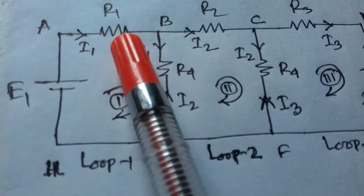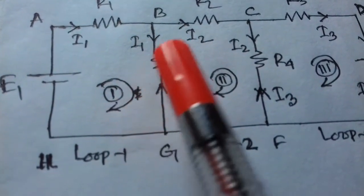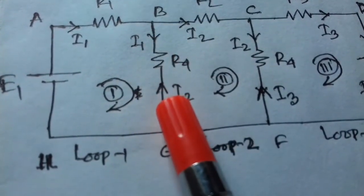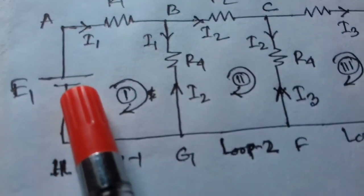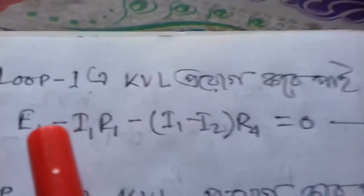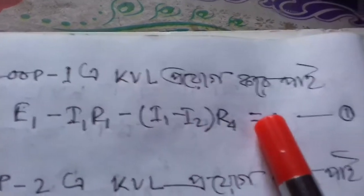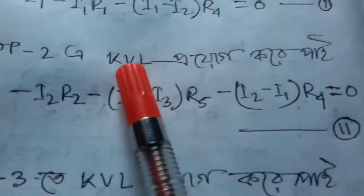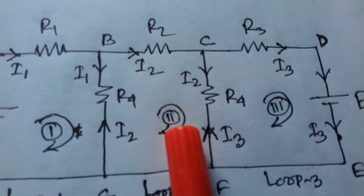So we write: minus I1 R1, minus I1 minus I2 into R4, plus E1 equals zero. We need to assign equation number 1. Now for loop 2 we begin writing the KVL equation.